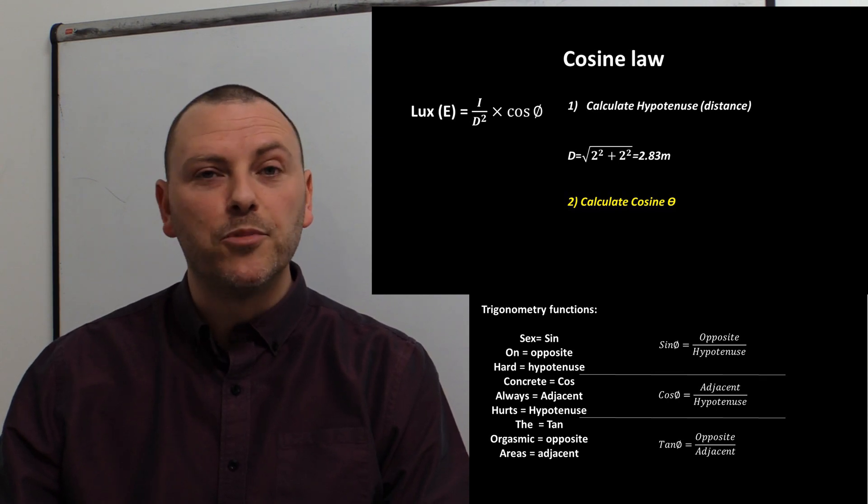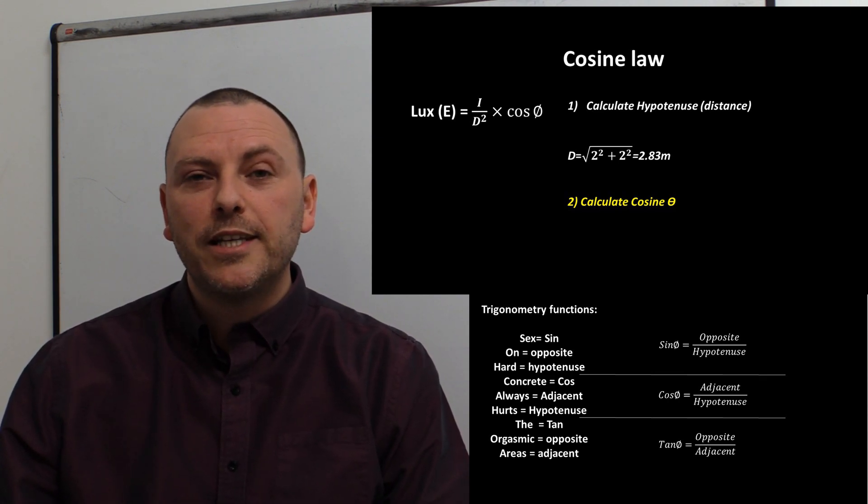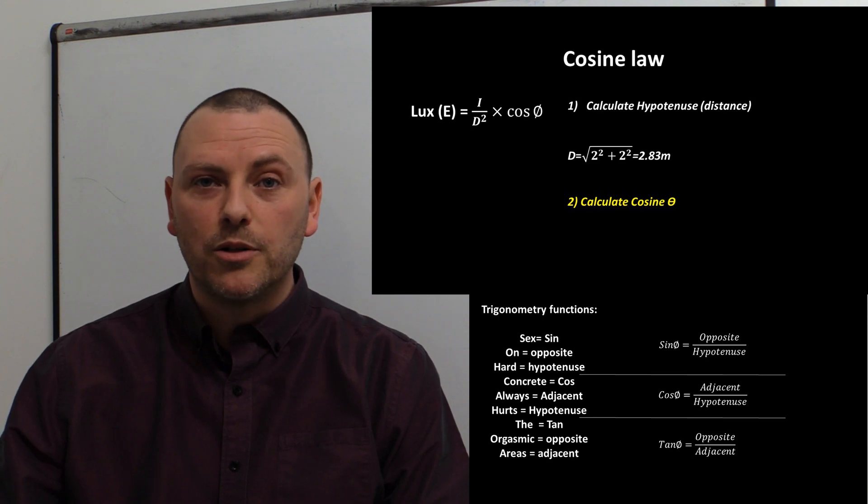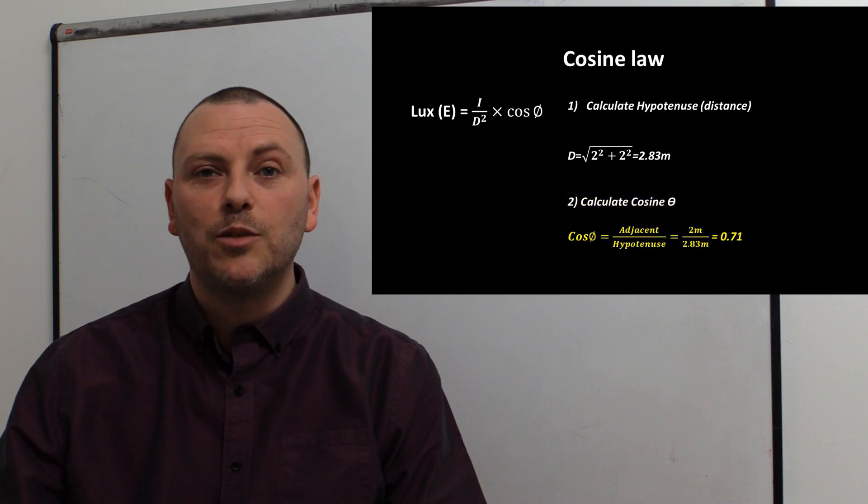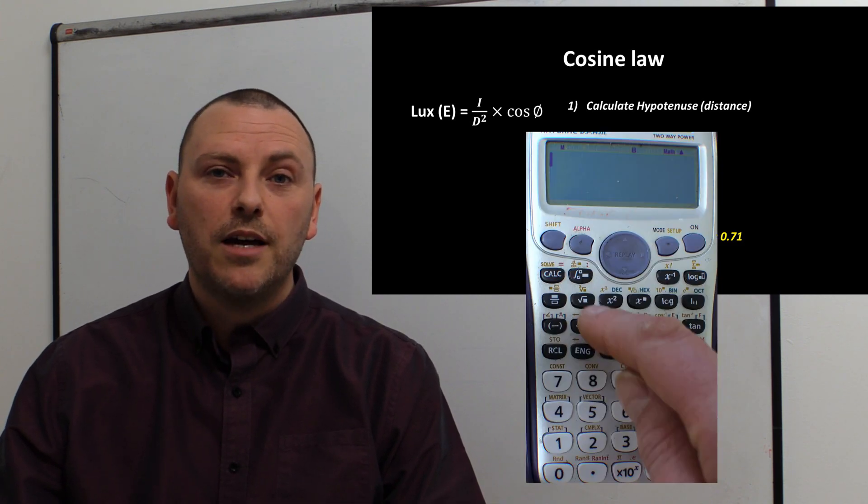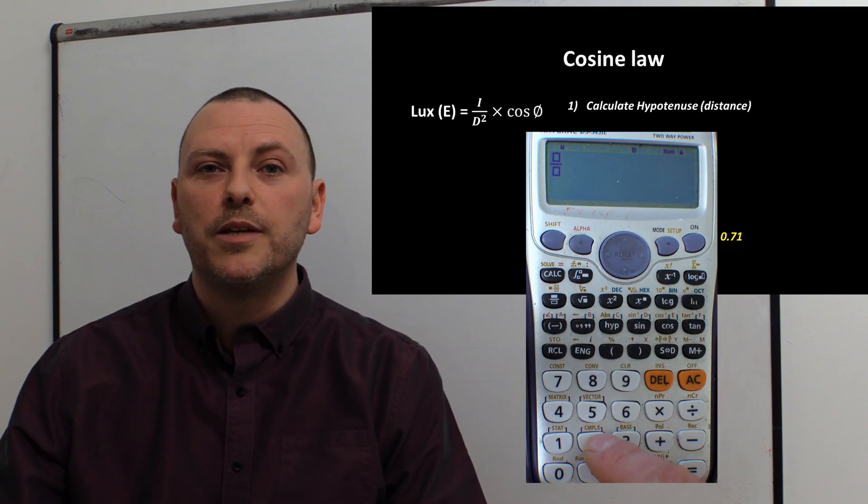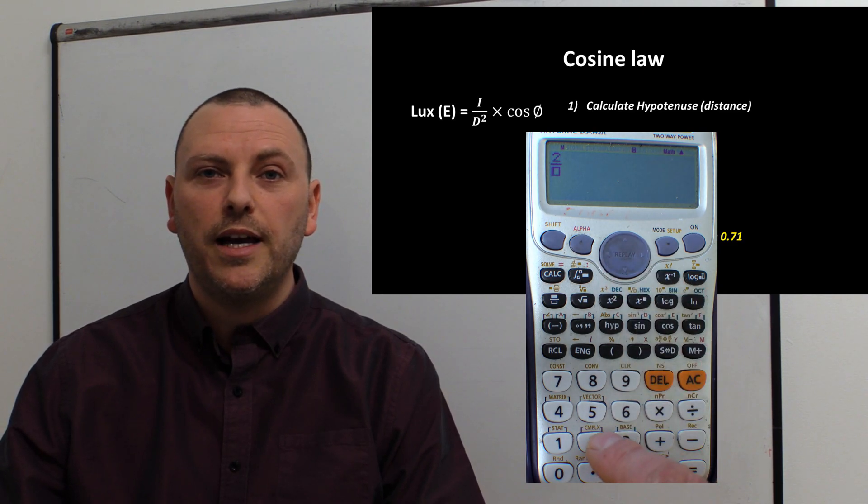We can see that to work out the cosine of an angle, we need our adjacent divided by our hypotenuse, which in our case is our height divided by our d value. To calculate that, we're going to get 2 meters divided by 2.83 meters, which gives us a cosine theta value of 0.71.